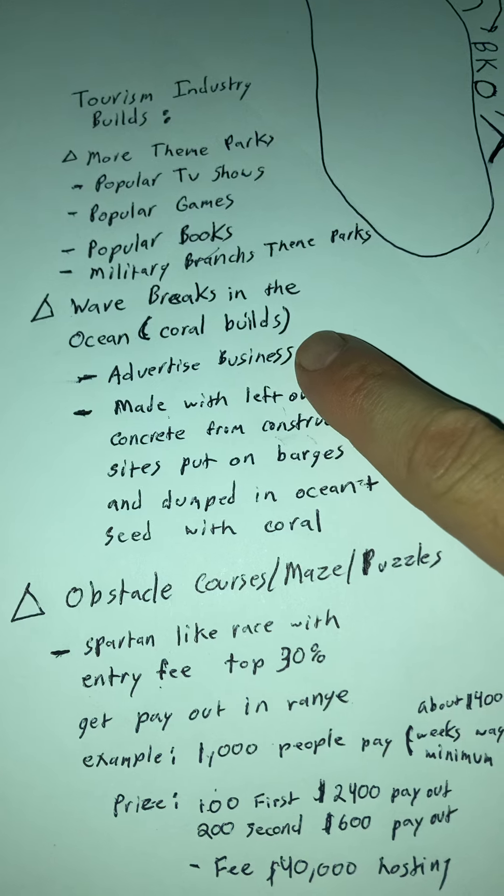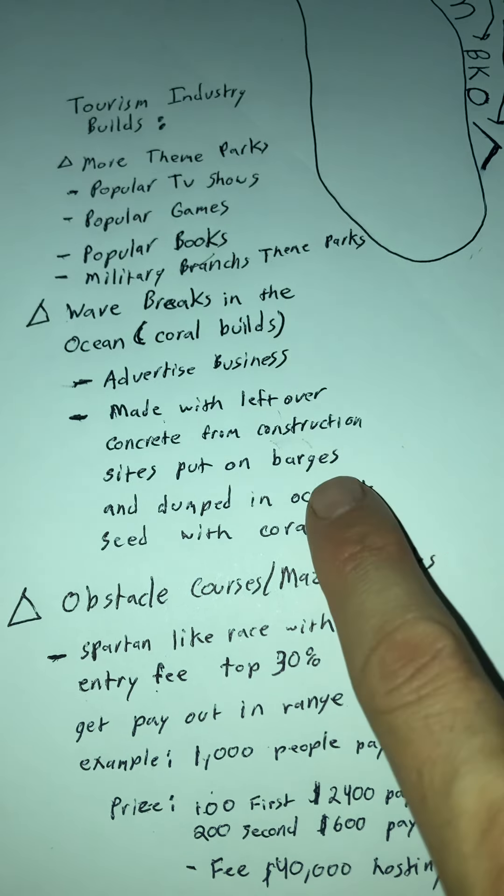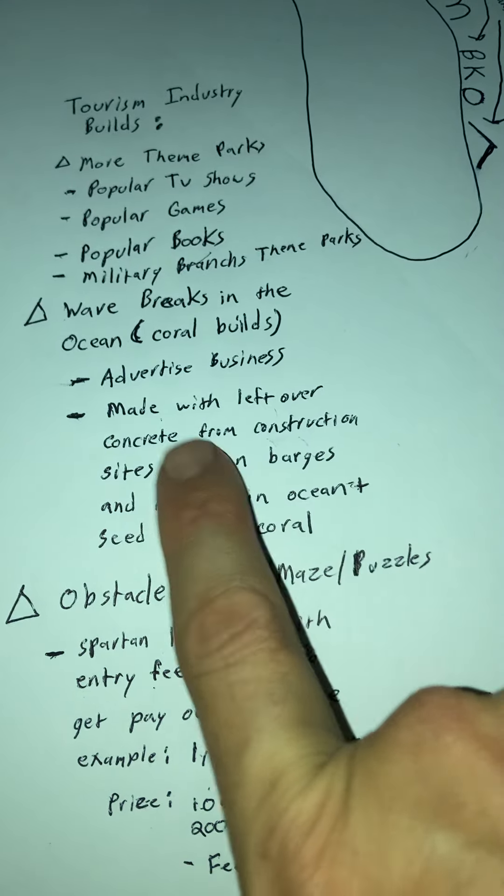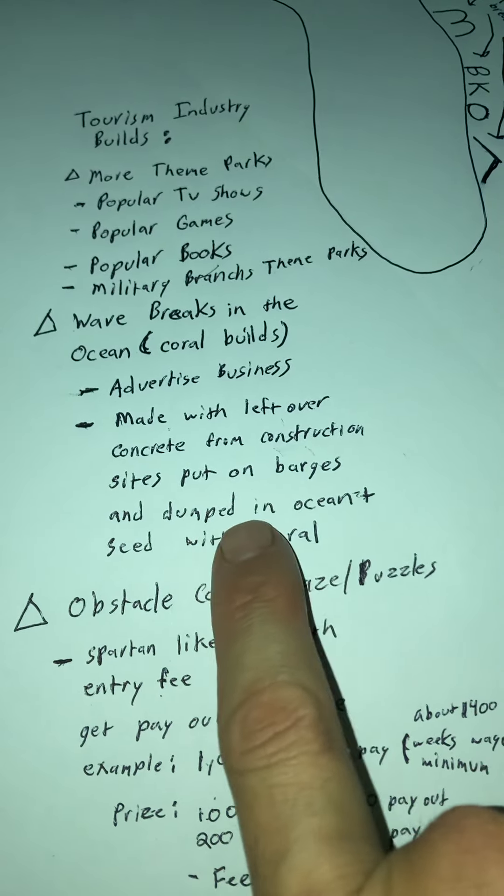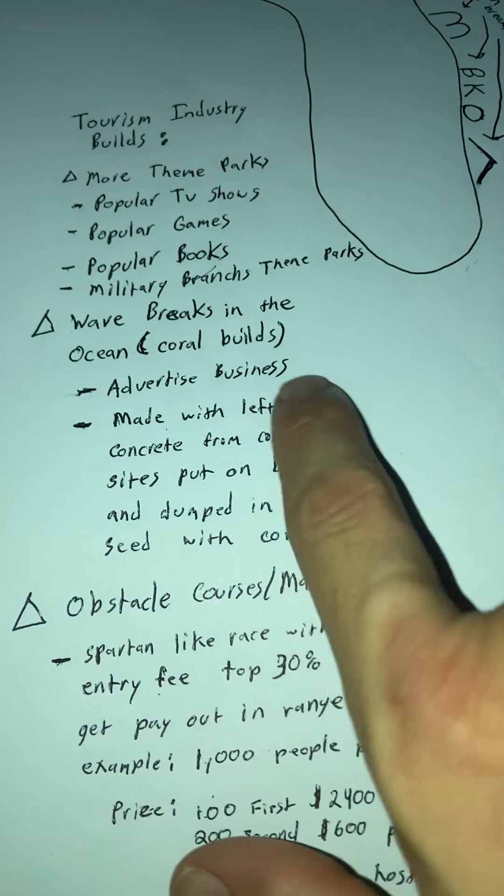Wave breaks in the ocean. They can advertise their business. They can use leftover concrete from construction sites to put on barges and dump in the ocean and seed with coral.